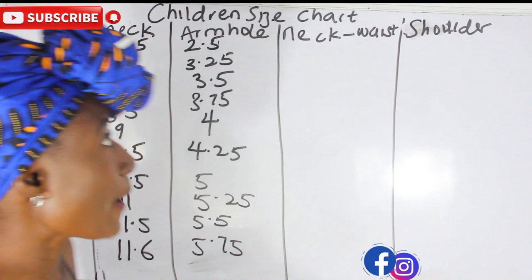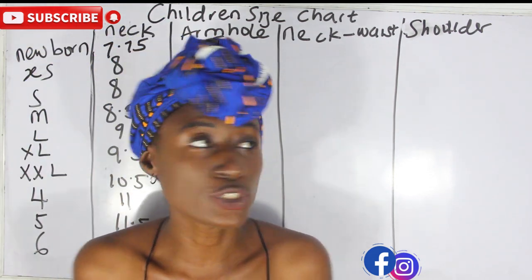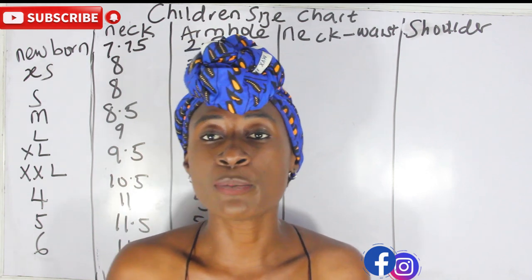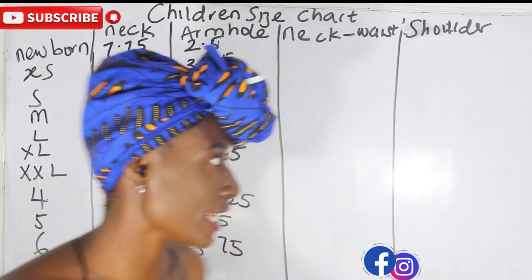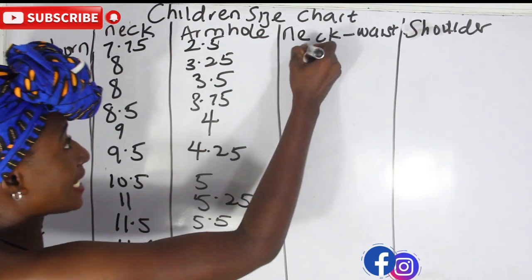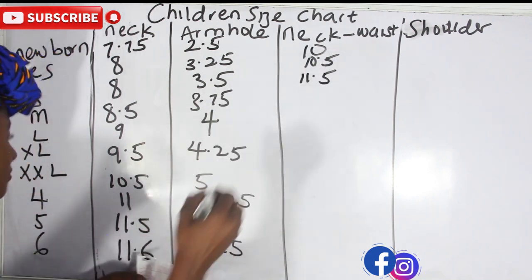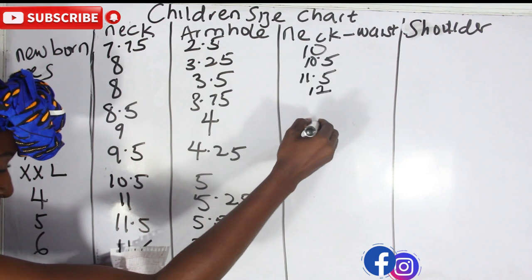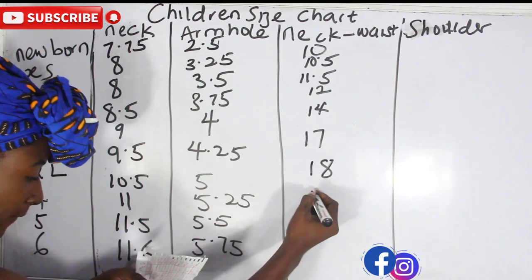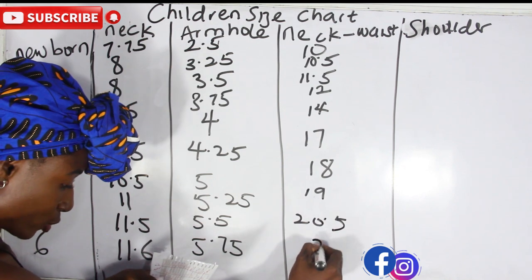The next measurement is our neck to waist, which is also shoulder to waist. You need your shoulder to waist if you are making a ball dress for children — it enables you to know where you have your basic dress bodice and then the lower part where you have your skirt length. For the neck to waist: newborn is 10 inches; extra small is 10.5; small is 11.5; medium is 12; large is 14; extra large is 17; extra extra large is 18; size four is 19; size five is 20.5; size six is 22 inches.